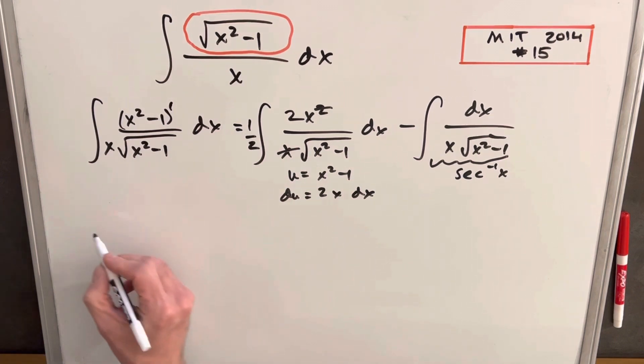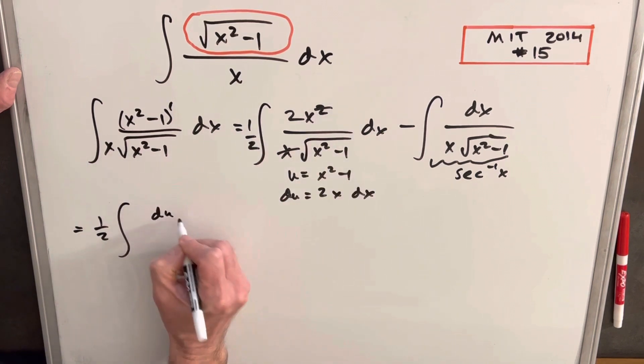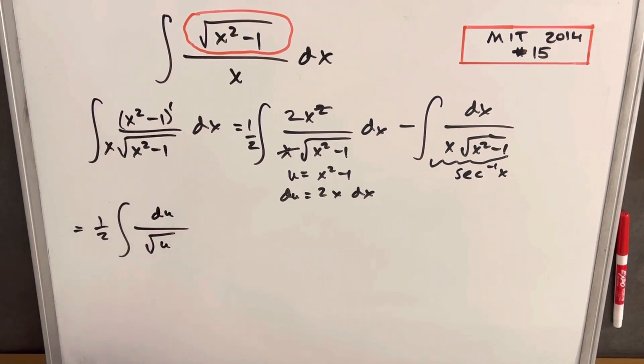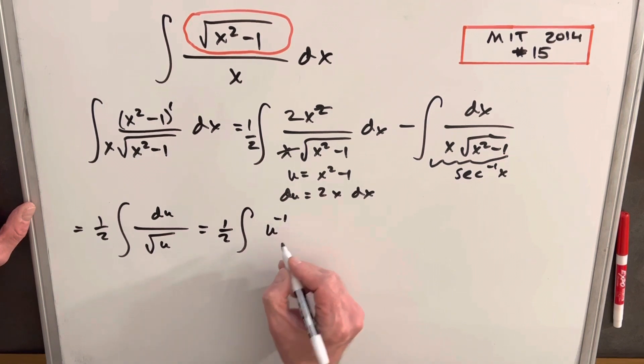And so now we can make our substitution. Let's do this. We're going to have 1 half du in the numerator, and then we're just going to have the square root of u. Then I'm just going to write this as an exponent, makes it easier to use the power rule. So I'll write this as u to the minus 1 half du.